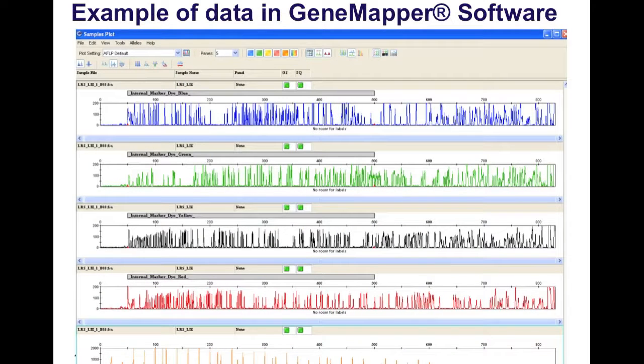Here is an example when you explore sequencing traces in GeneMapper software. It allows you to separate these traces into individual components. Here in blue you see all the peaks for guanosine nucleotides, the G peaks. Shown here in green are the A peaks for the A nucleotide, here in black are the T traces, and here in red are the C traces. Shown here is the internal size standard, in this case we use the LIZ-600 size standard.